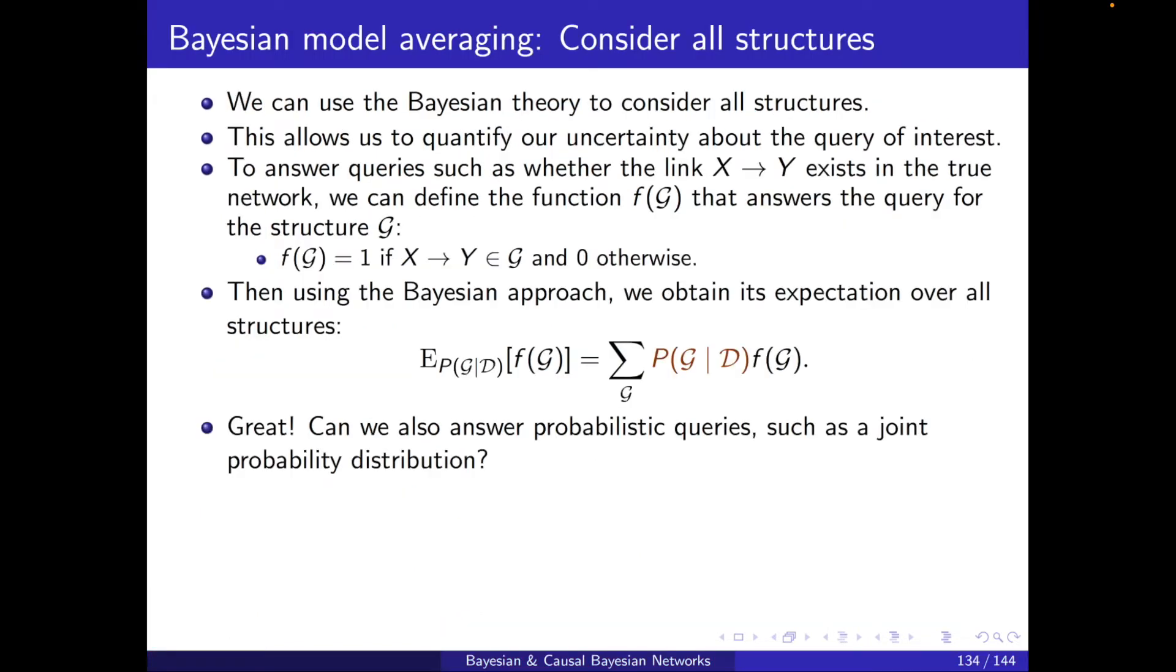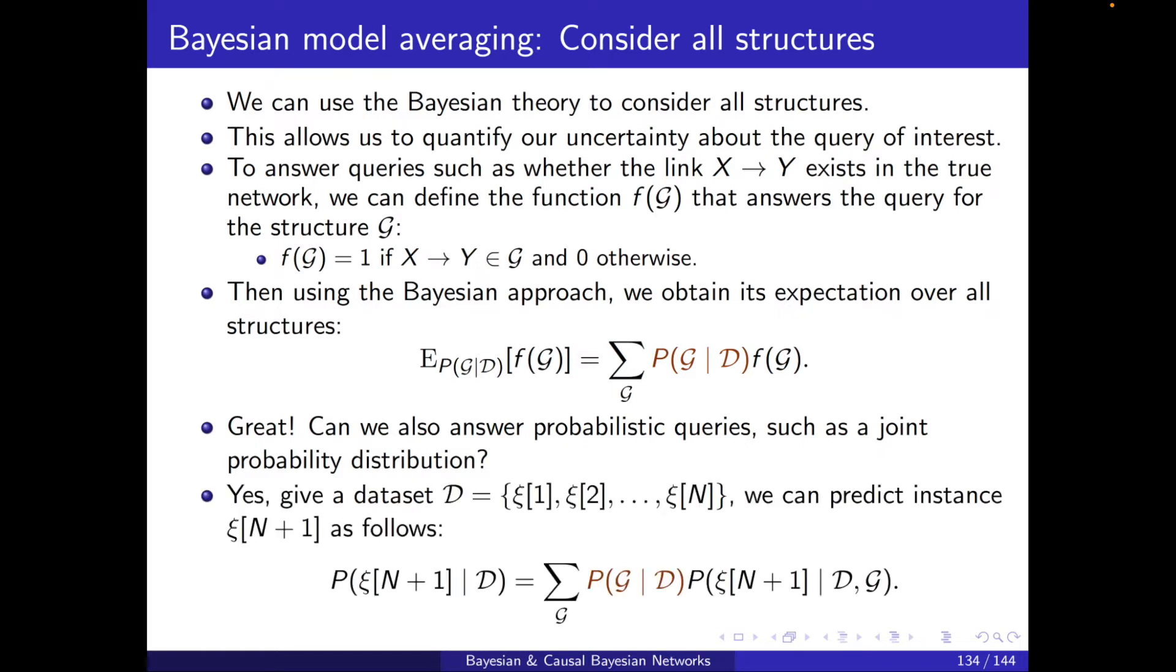We briefly touched this in the parameter learnings chapter. So can we answer probabilistic queries? The answer is yes. Given the dataset D from 1 to n instances, we can predict instance n plus 1 as follows. The probability of the new instance conditioned on the dataset: we can sum over P(G|D) times P(new instance|D,G), and this will be over all networks G.